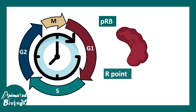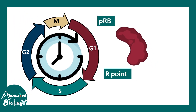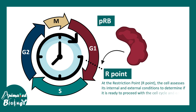To understand how PRB regulates the cell cycle, we need to know about a critical point called the R point, or restriction point. At the restriction point, the cell assesses internal and external conditions and determines whether it is wise to proceed in the cell cycle or whether the cell cycle should be paused. PRB is a critical player at this restriction point.